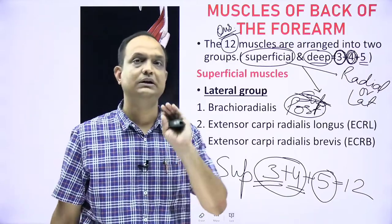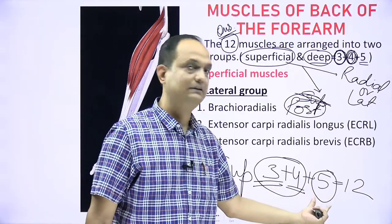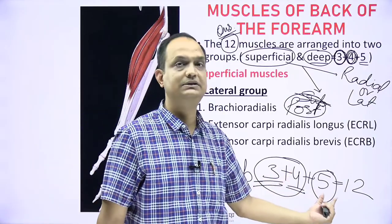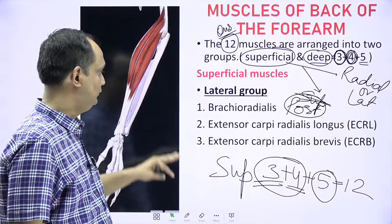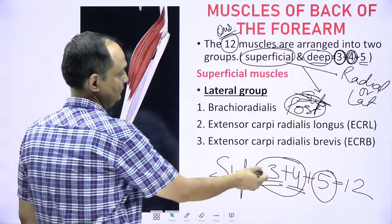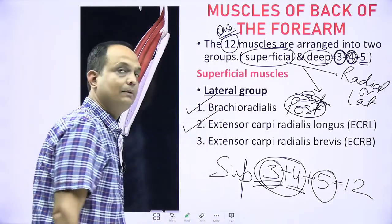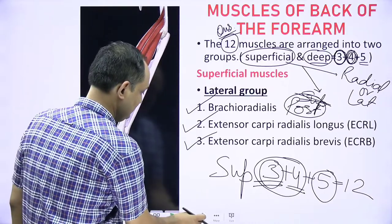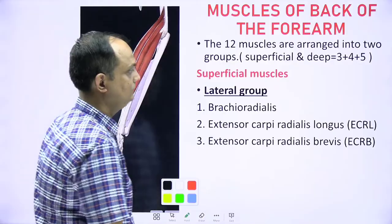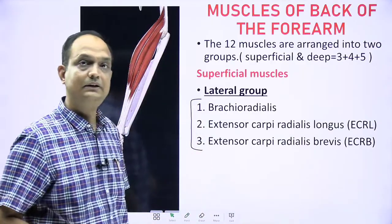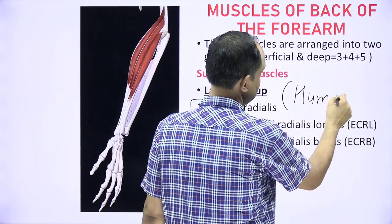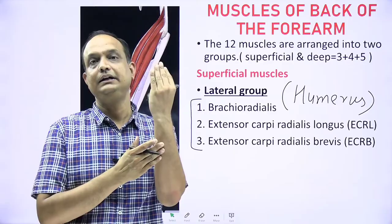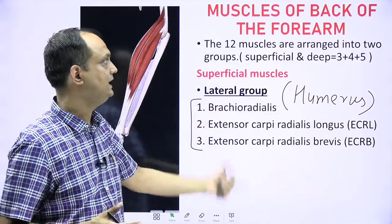The deep muscles are not visible without removing the seven superficial muscles — that is why they are termed superficial and deep. The three lateral muscles are: brachioradialis, extensor carpi radialis longus, and extensor carpi radialis brevis. Importantly, all three of these lateral muscles arise from the humerus, even though we are studying the forearm.